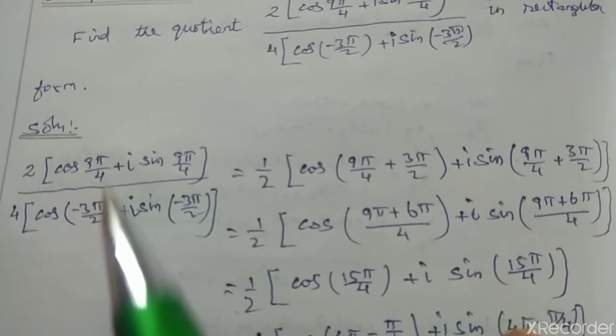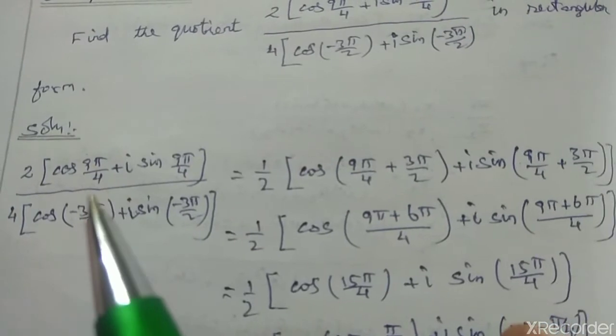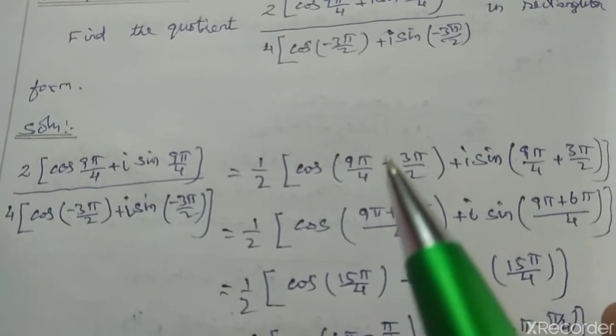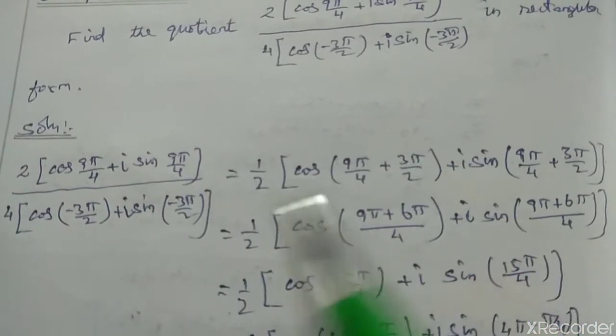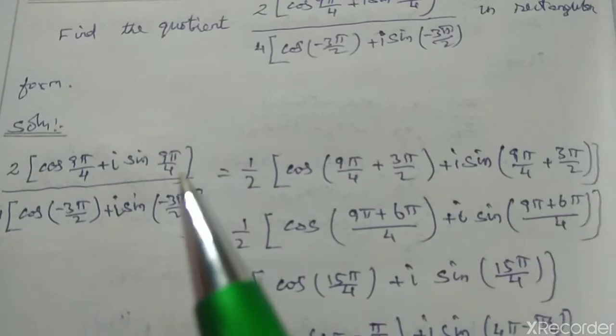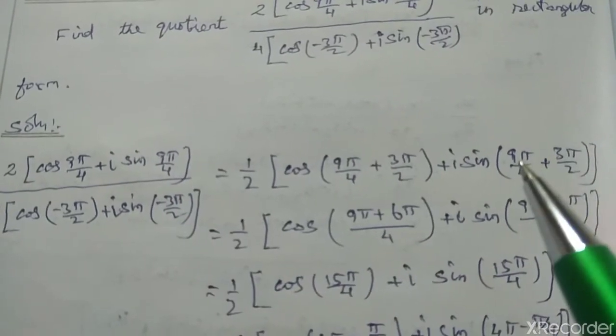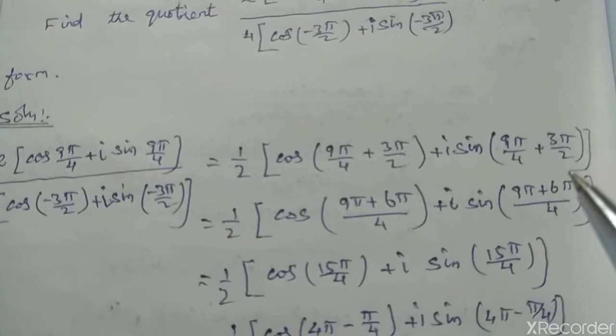When dividing, we subtract the arguments, so 9π/4 minus (-3π/2), which becomes 9π/4 plus 3π/2. Plus i sin of 9π/4 minus (-3π/2), which is plus 3π/2.